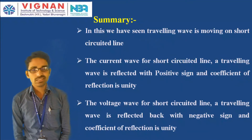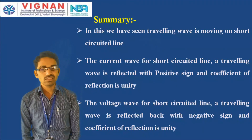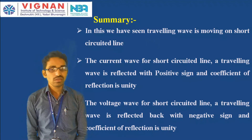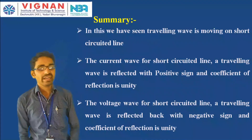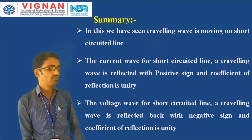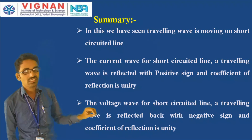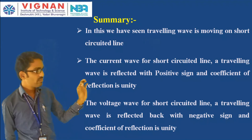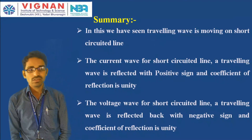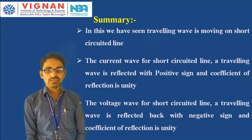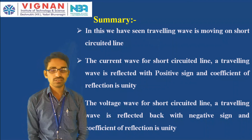In summary, in this lecture we have seen a traveling wave moving on a short-circuited line. For the short-circuited line, the current wave is reflected back with positive sign and the coefficient of reflection is unity, while the voltage wave is reflected back with negative sign. That is the behavior of the short-circuited line at the receiving end. Thank you everyone for listening to this class.